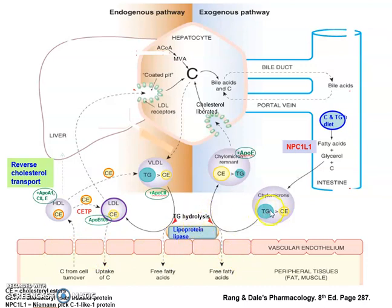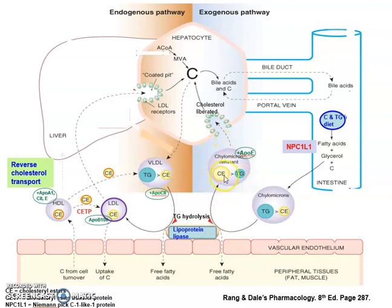This allows for the triglycerides packaged within the chylomicrons to be liberated as they move into the adipose tissue and the muscle, leaving behind a chylomicron remnant which has very little triglycerides left and predominantly now has the cholesterol esters.